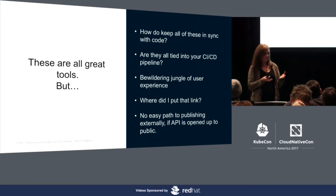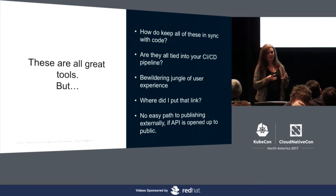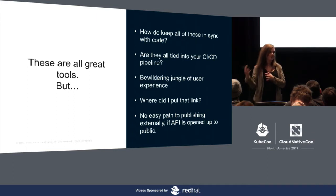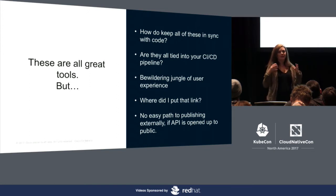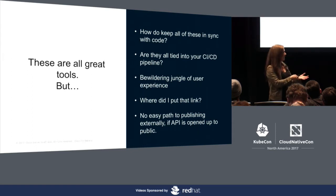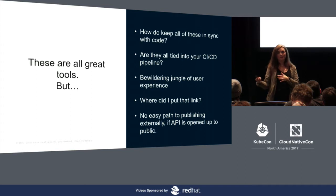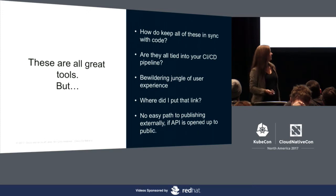Also, if you're building an internal API, it's really great to think that maybe someday it might get opened up externally — maybe it grows to be a service you open to customers or your community. If you don't think about that publishing path at the beginning, you have a really big hurdle when you're ready to open it up externally. There's no easy path to say 'now we're going to make this API open to the public or to a small set of people for trials.' It puts a big barrier there.